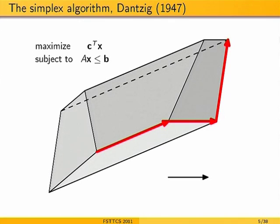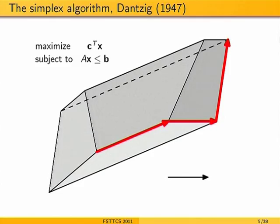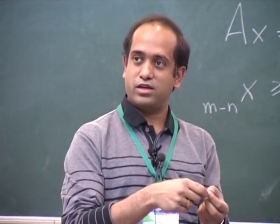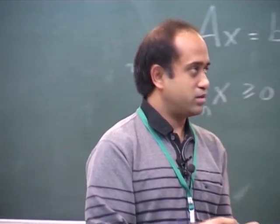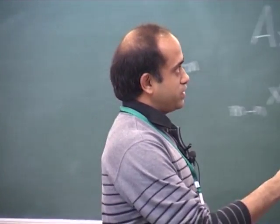Starting from a basic solution, there are several edges to move along. You move in the direction that improves the objective function. When you reach a vertex where you cannot move to a better vertex in any direction, you are at an optimum — because everything is linear, as long as you can move in a better direction you are improving the solution, and if you cannot improve then you are at an optimum.